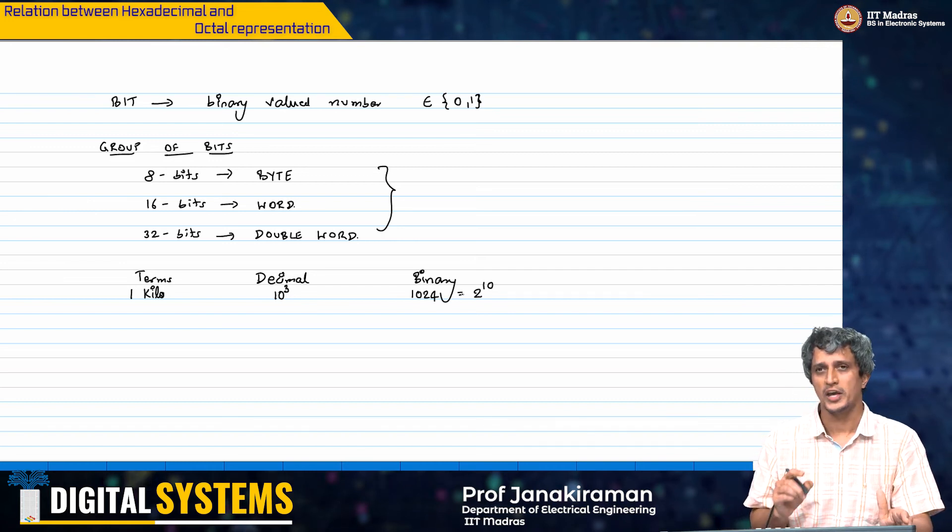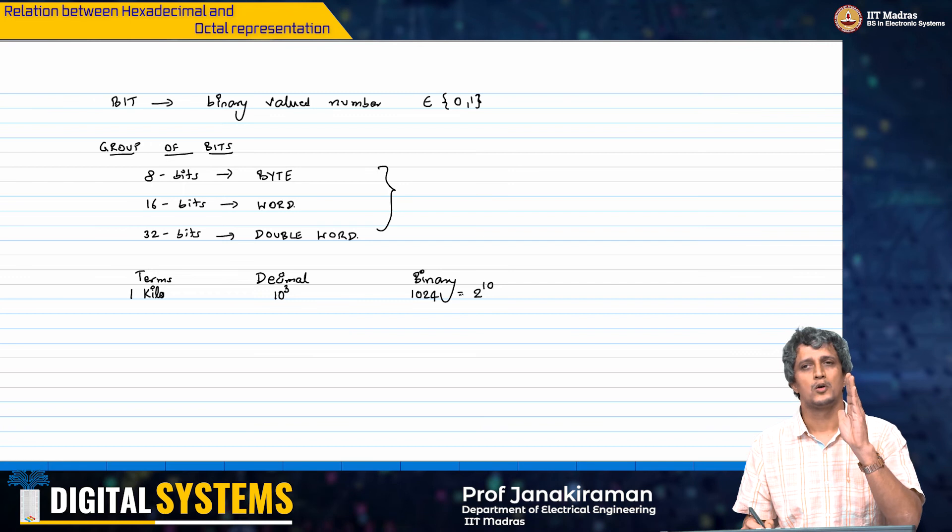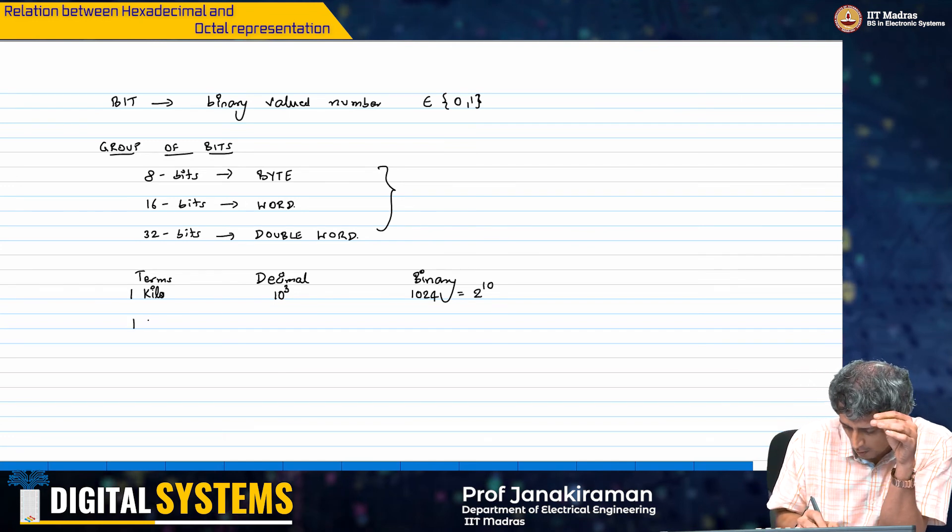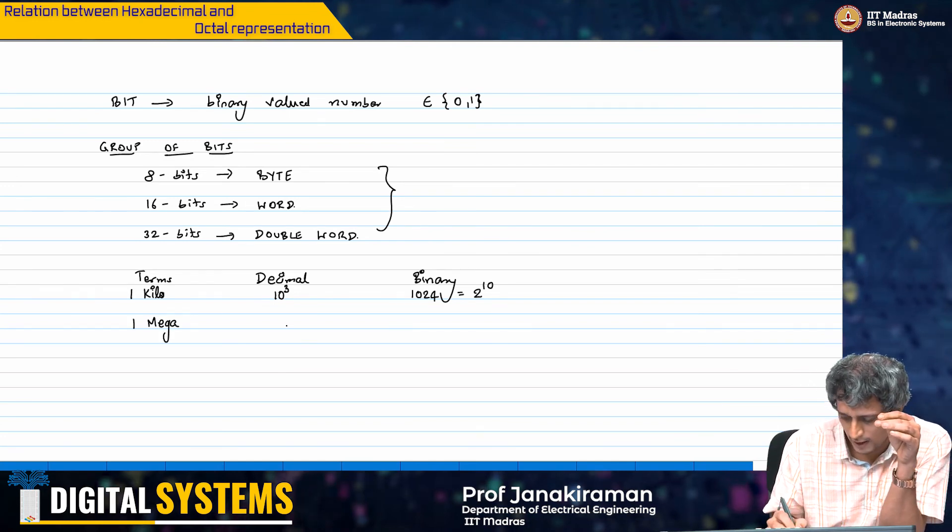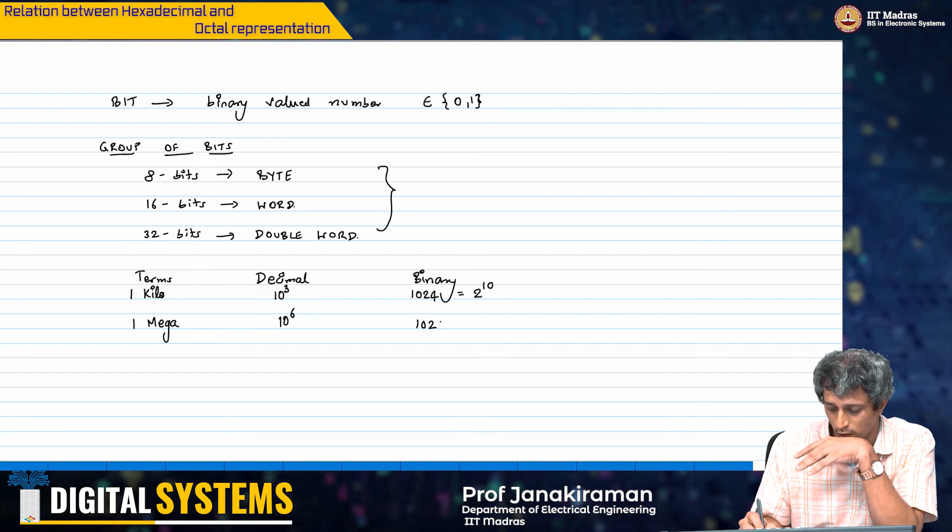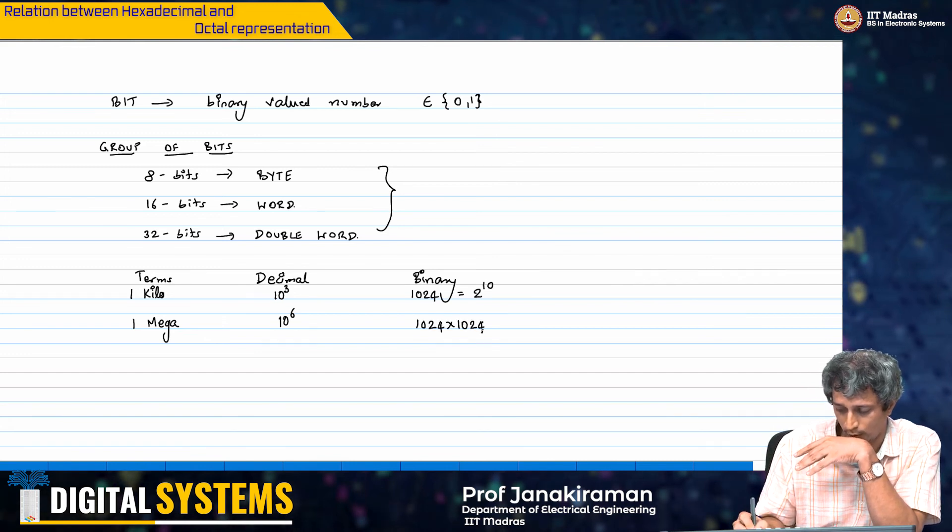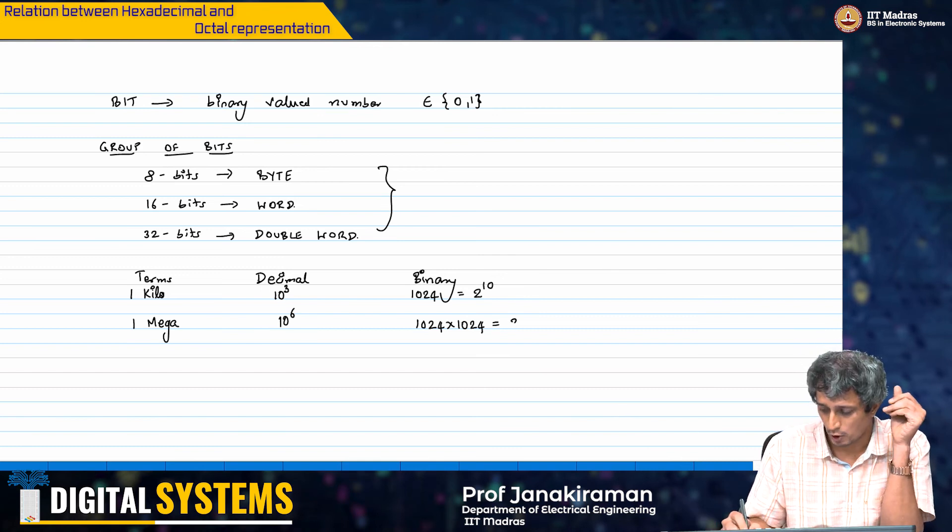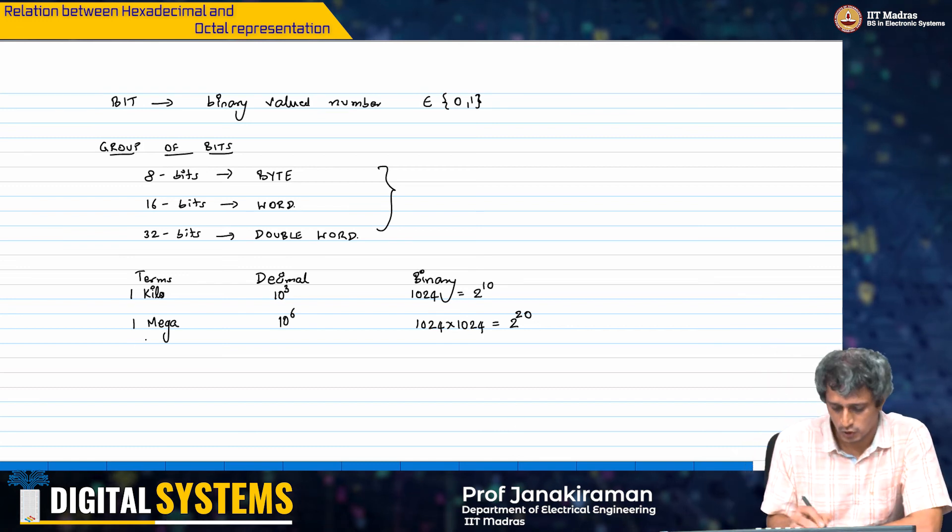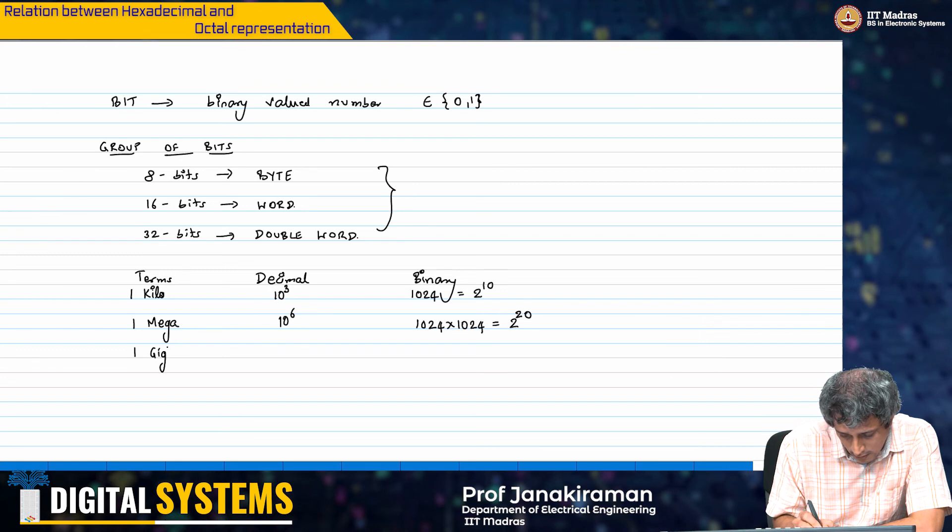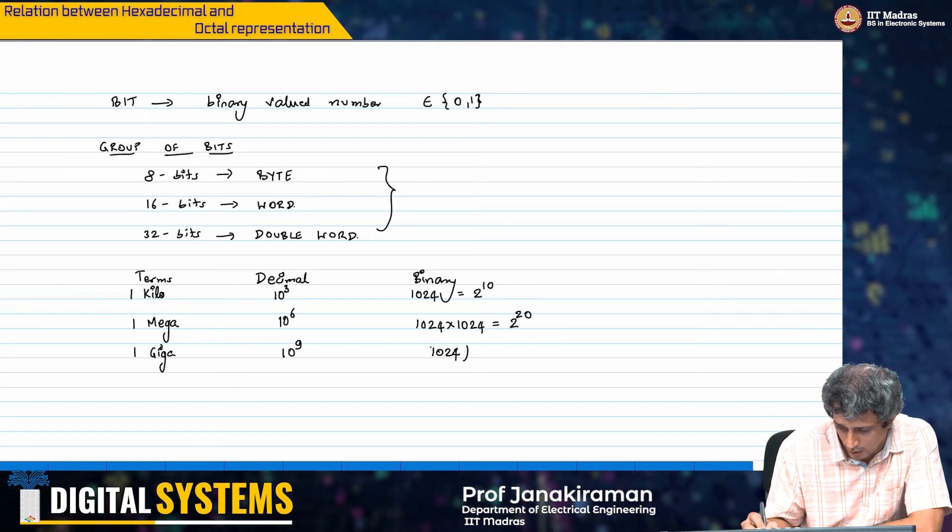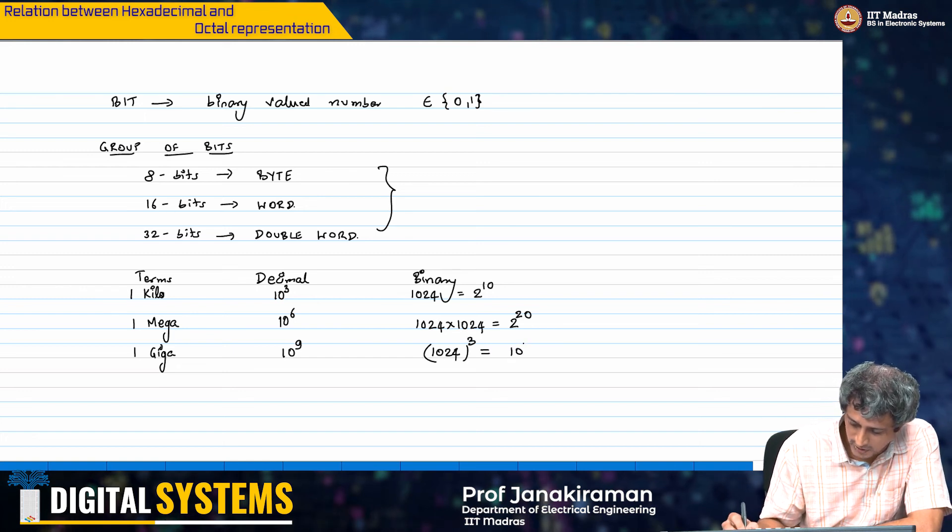Likewise, 1 mega is 10 power 6, mega-ohms is 10 power 6. But here it is 1024 times 1024. It is 2 power 20, because 1024 is 2 power 10. Likewise, giga is 10 power 9. But here it is 1024 power 3, and therefore it is 2 power 30.